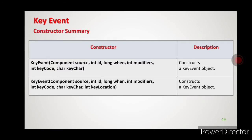Next, these are some constructors which we will use with the key event class. The first constructor takes parameters: source, id, when, modifiers, key code, and key char. Source means from which source the key event is generating — the event source — whether it is from modifier keys or whether we are typing characters. ID means each event in a programming language is represented by some integer numbers; based on that integer number we identify which event is generated.